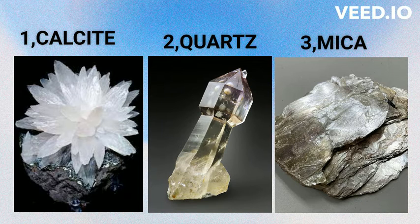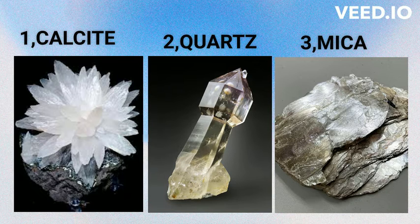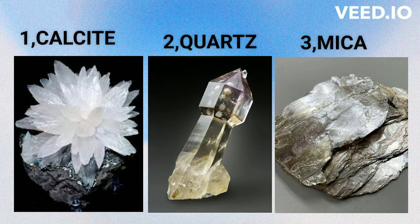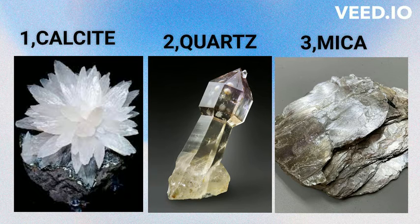Calcite is a common anisotropic mineral that exhibits strong birefringence. When viewed under a microscope, calcite crystals often display vivid interference colors and characteristic cleavage patterns. Quartz is another example of an anisotropic mineral, although its birefringence is typically weaker compared to minerals like calcite. Different varieties of quartz may exhibit varying degrees of birefringence and optical behavior. Minerals in the mica group, such as muscovite and biotite, are anisotropic due to their layered crystal structure. They often show distinct basal cleavage and varying optical properties when viewed under polarized light.